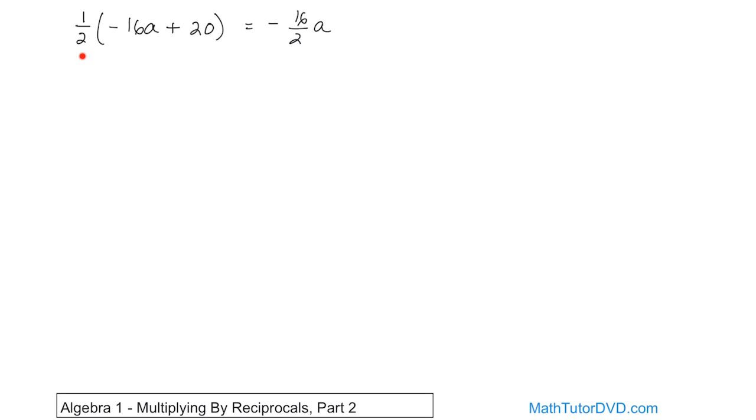Now, we have to distribute 1 half times 20, which can be written as 20 over 2. It's the same story. 20 times 1 gives you this. And then on the bottom, the implied 1 times the 2 gives you this. So now we have to try to simplify that.